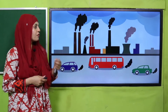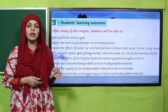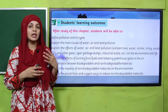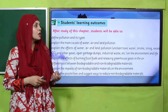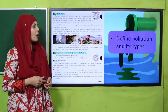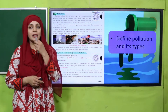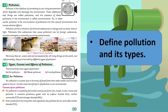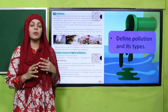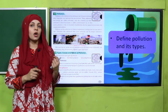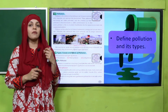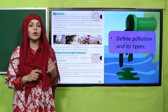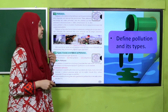Now let's start the review. These are all the student learning outcomes that we have completed in this unit. In lecture number one we discussed pollution and its types — quickly tell me: define pollution and its types. Addition of any type of pollutant into the environment is called pollution, which has a bad effect on the environment. The three types of pollution are air, water, and land pollution.